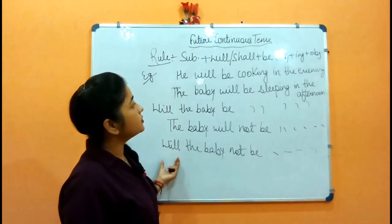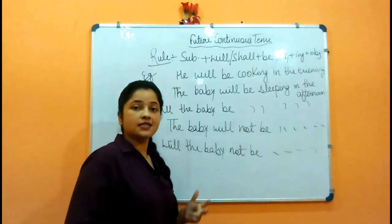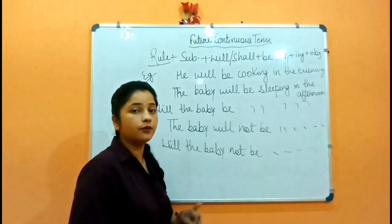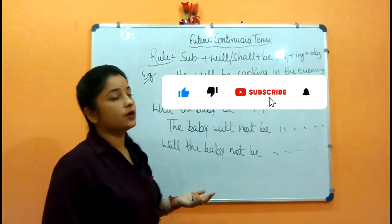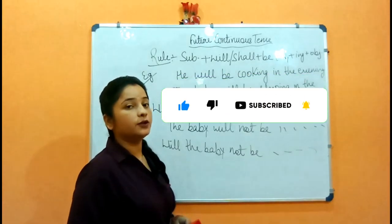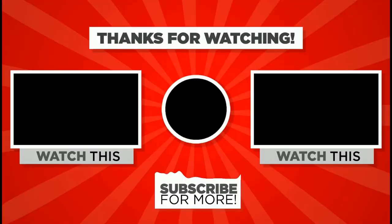The rule for future continuous tense: sentences involve actions like 'कर रहे होंगे, हो रहे होंगे' (will be doing). This is your future continuous tense. I hope you all understand, guys. Thank you for watching my video. If you like my video, please like, share, and subscribe to my channel.